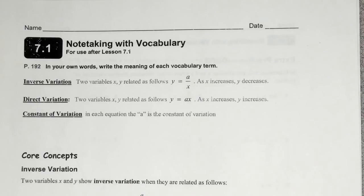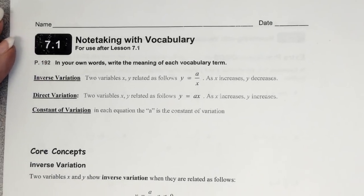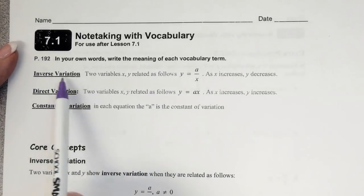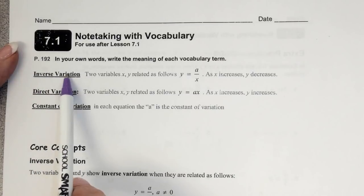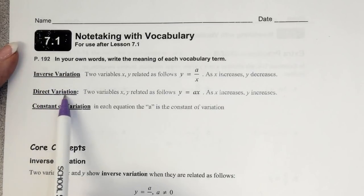We are taking a look here today at page 192 in the student journal. It's section 7.1. Our goal for today is to be able to solve problems involving inverse variation. We're also going to take a look at some direct variation.